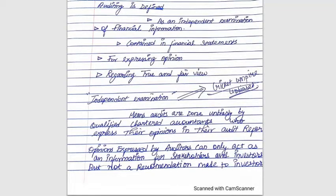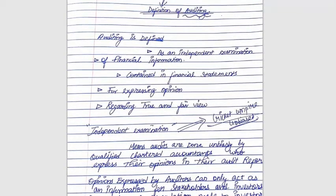The auditor has to independently examine all the records and then express an unbiased opinion in the audit report. So independent examination means being unbiased. Now, what is the auditor examining independently? He has to be doing an independent examination of the financial information.